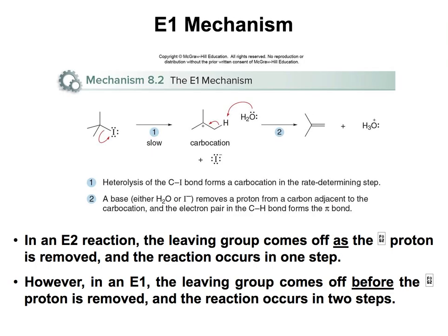The mechanism for an E1 reaction goes like this. The first step is shared with SN1 reactions — the leaving group will leave, and that is the rate determining step, forming the carbocation. Then the base will come and take the proton. Water is a weak base, but it will come, take that hydrogen, and form the pi bond. This is the mechanism of an E1 reaction.